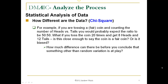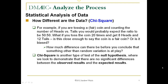How different are the data? For example, if you are tossing a fair coin and counting the number of heads versus tails, you would probably expect the ratio to be 50-50. What if you toss the coin 20 times and get 8 heads and 12 tails? Is this close enough to say the coin is fair, or is the coin biased? How much difference can there be before you conclude that something other than just random variation is at play? Chi-Square is another type of test of the null hypothesis where we look to demonstrate that there are no significant differences between observed results and expected results.